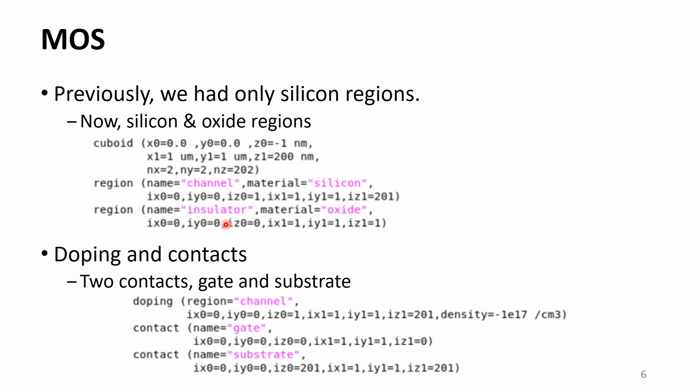In order to place the interface at z equal to 0, the NOT value is minus 1 nanometer. Also, we must have two contacts. One is attached to the insulator, the other one is attached to the channel. They are named as gate and substrate, respectively.